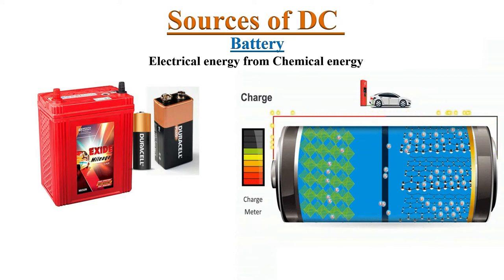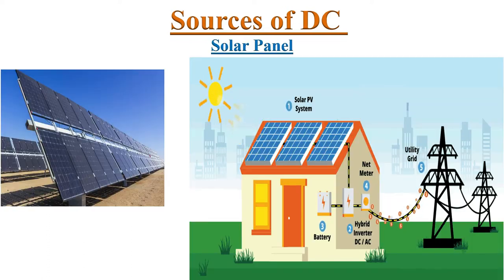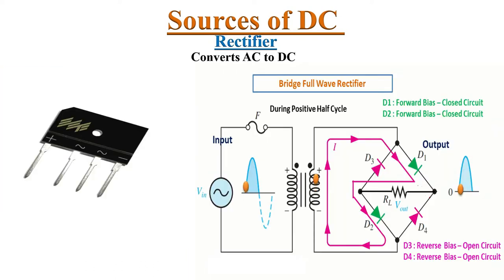In batteries, electrical energy produced from chemical energy stored in the battery. Solar panels produces direct current. The sun shining on the panels stimulates the flow of electrons in one direction. So, the current is direct current. A device called rectifier that can convert alternating current into direct current.